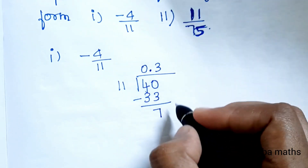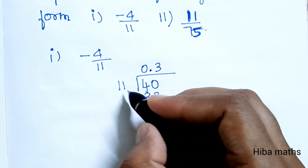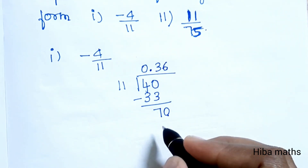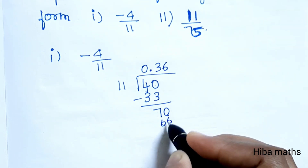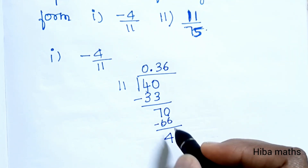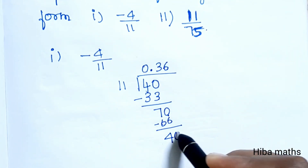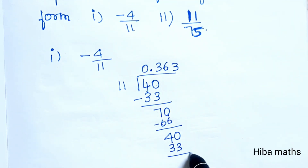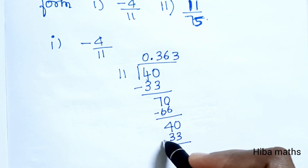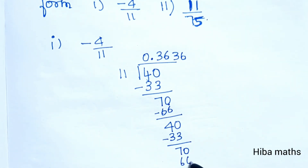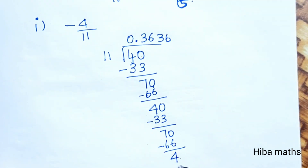The answer so far has remainder 7. Add 0 to get 70. 70 divided by 11 is 6 times, giving 66. Remainder is 4. Then 40 divided by 11 is 3 times giving 33, remainder 7. Then 70 again — this pattern repeats: 6 times, giving 66, remainder 4, and so on.